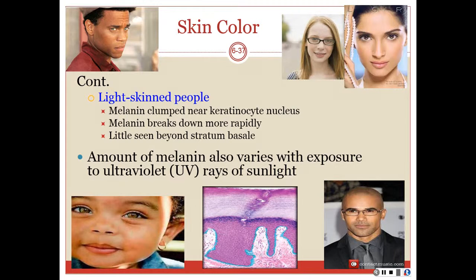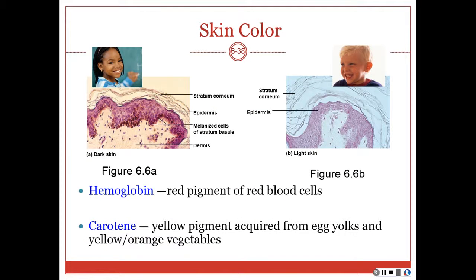Other factors in skin color are hemoglobin and keratin. Hemoglobin, the red pigment of blood, imparts reddish to pinkish hues to the skin. Keratin is a yellow pigment that can become concentrated in the stratum corneum and in subcutaneous fat.